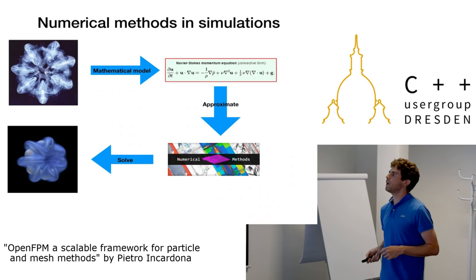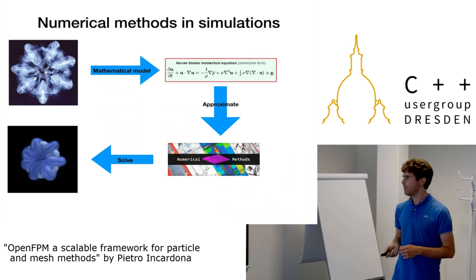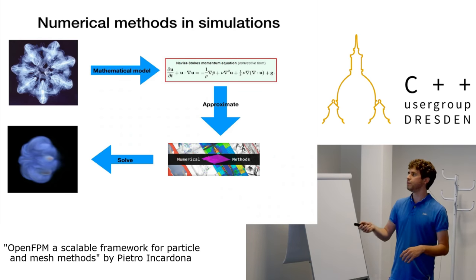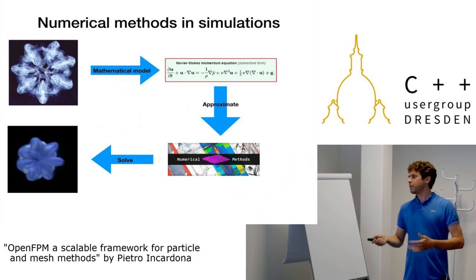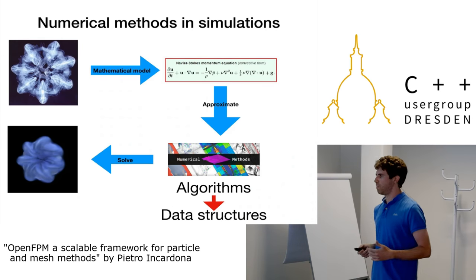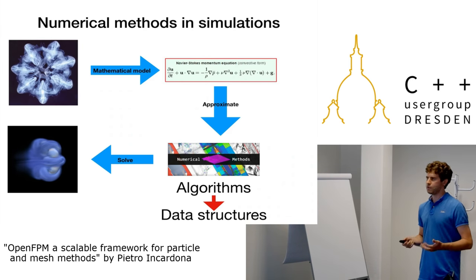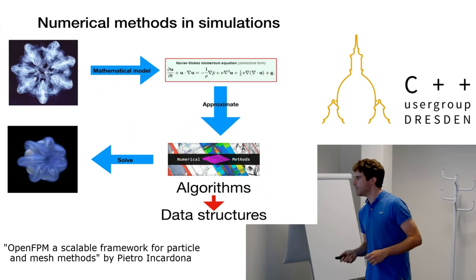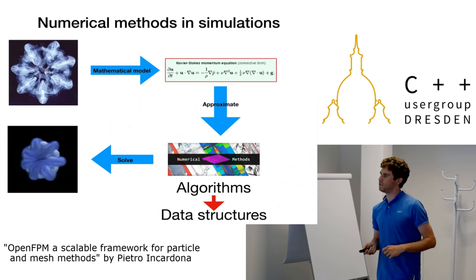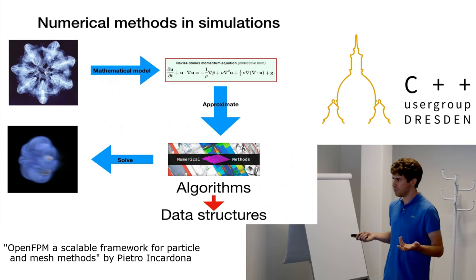This opens up a completely new field: numerical methods, which are algorithms that attempt to solve the mathematical model in a numerical, approximate way. These algorithms use a lot of floating point operations, which is where the computer comes in. And because you have algorithms, you also need data structures.